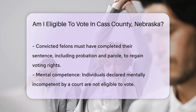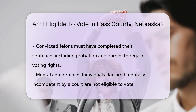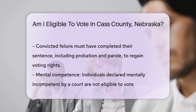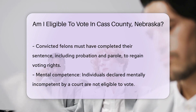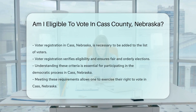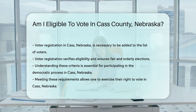This criterion reflects the belief in second chances and the restoration of rights after serving one's time. Mental competence is also considered. Individuals declared mentally incompetent by a court are not eligible to vote, ensuring that voters can make informed decisions. Lastly, you must be registered to vote in Cass, Nebraska. Voter registration is a process that verifies your eligibility and adds you to the list of voters. It is a critical step in ensuring that elections are conducted fairly and orderly.